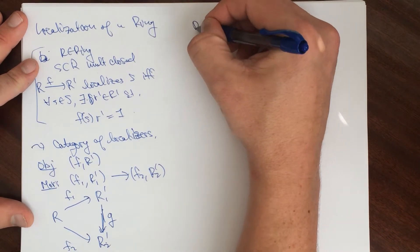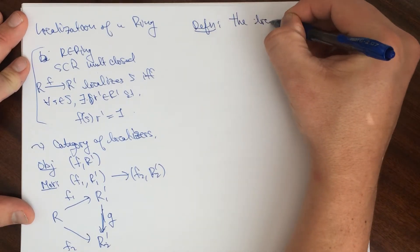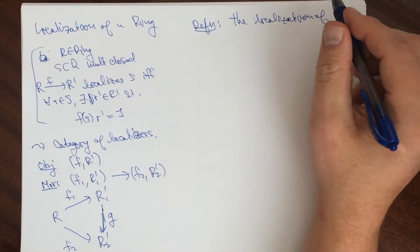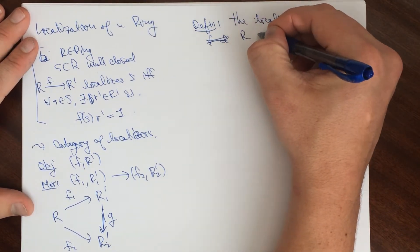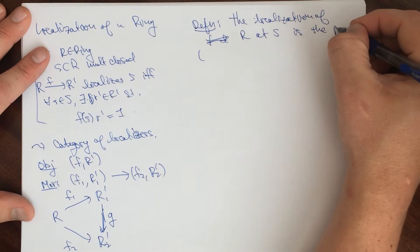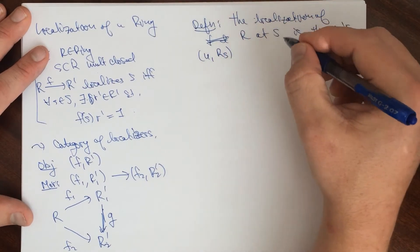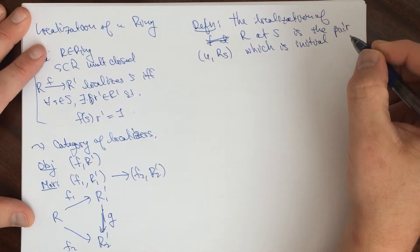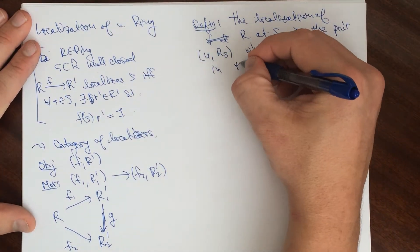The definition, the localization of R at S is the pair, sometimes we just say the ring, but it's the pair U R of S, which is initial in this category. The category of localizations.